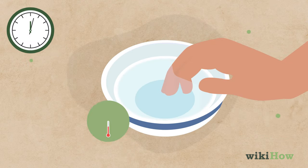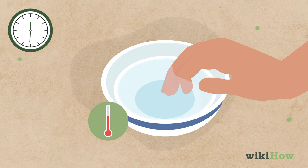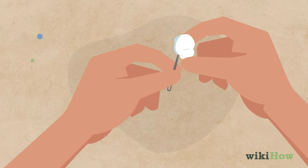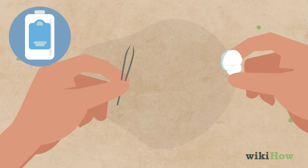Soak the area in warm water for a few minutes to make the skin softer. Then, sterilize a needle and tweezers with rubbing alcohol and a cotton ball.